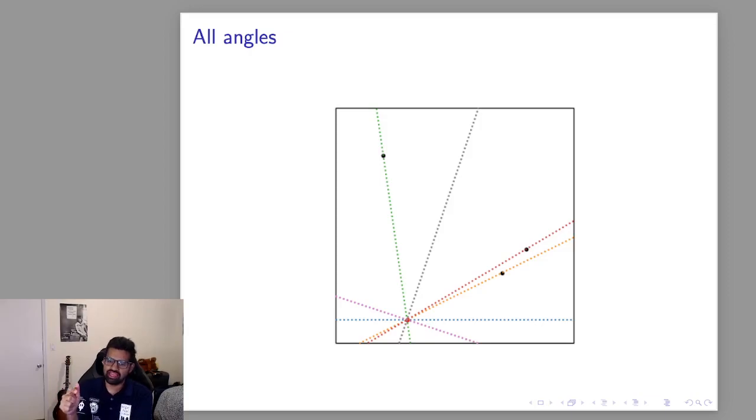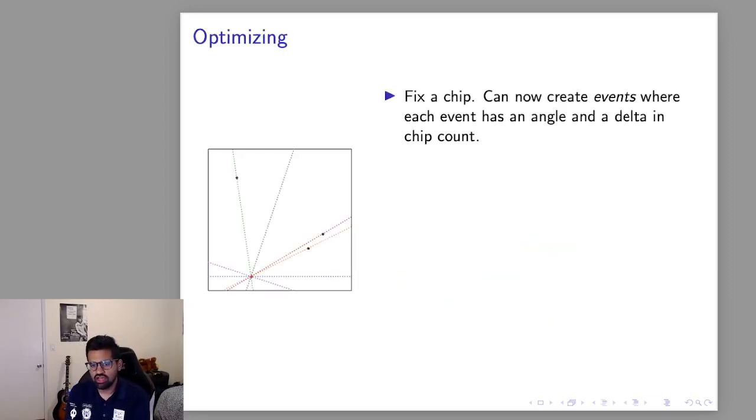So we'll start with the blue line, just like a flat horizontal line, then we'll move on to the orange line then the red line then the gray line and so on and so forth. And the thing to note is that every time you move from one line to the next the overall chip count changes by at most one.